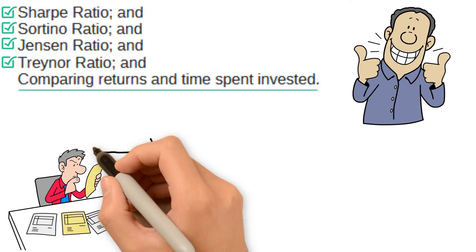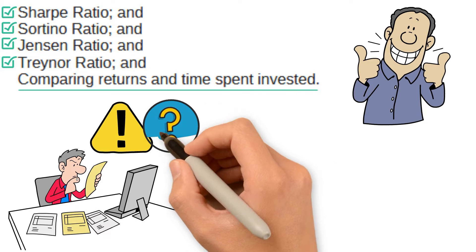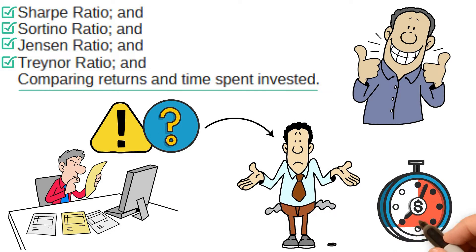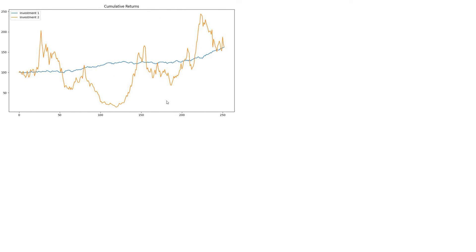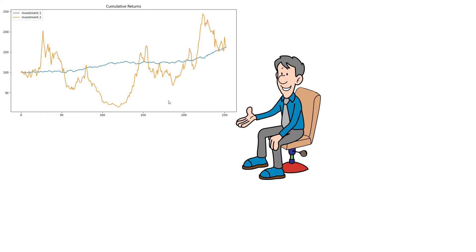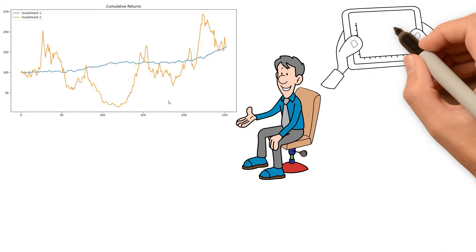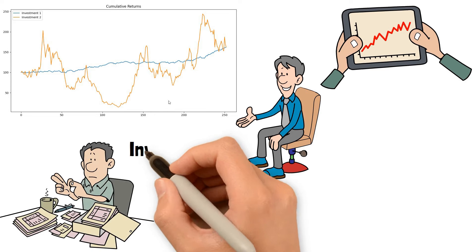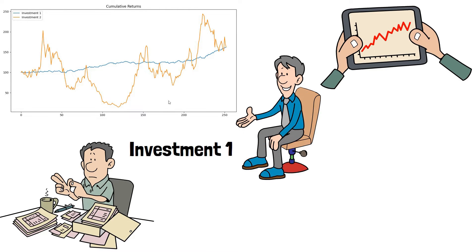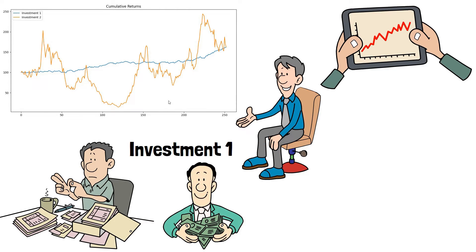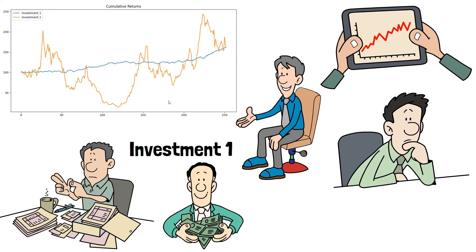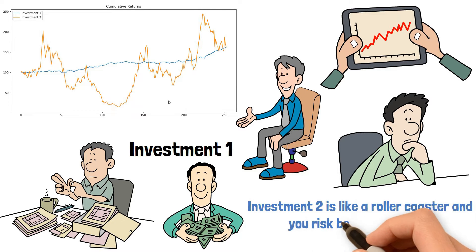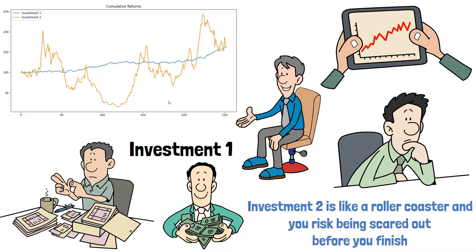First, let's explain what we mean by risk and why it's important. Risk is the probability of losing money over a certain period. For example, look at the two different strategies on the screen. Which one would you rather trade? We assume most traders and investors would choose investment one. You get the same result for both investments, but you suffer a lot less by investing in number one. Investment two is like a roller coaster, and you'll risk being scared out before you finish.